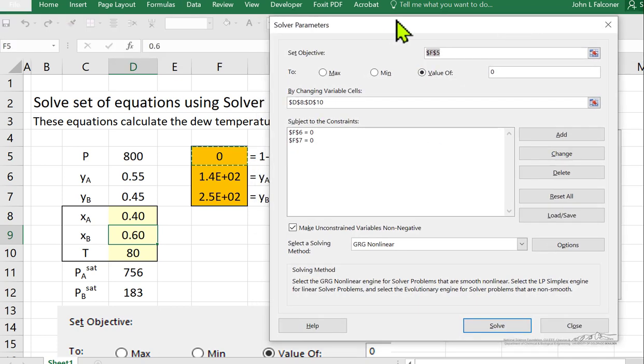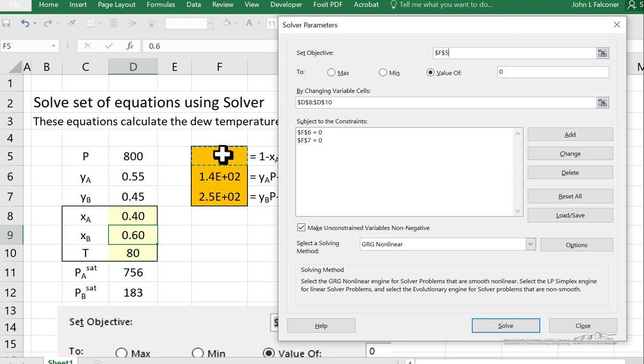Now I've already put in the values, but let's show we picked as the objective function this cell. That's arbitrary. Either of these three could be picked. The other two, we just listed as constraints. So we want F6 to be zero. And we want F7 to be zero.